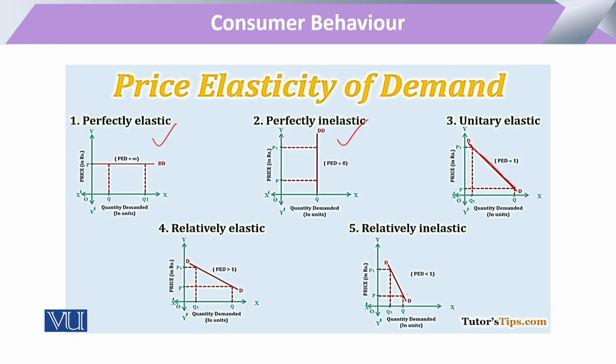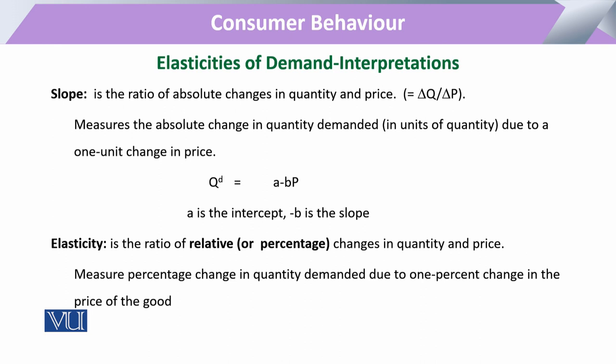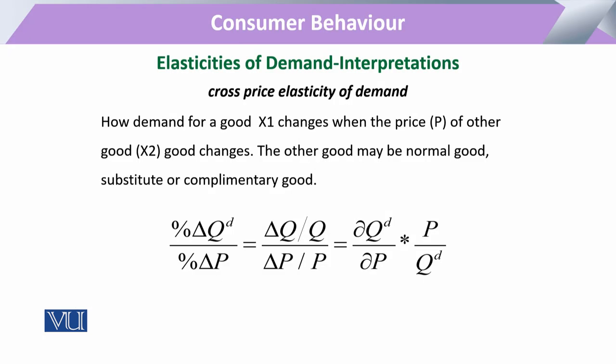When dealing with elasticity on a graph, we see the responsiveness of quantity with respect to price. There is an important difference between slope and elasticity: slope shows the ratio of absolute change in quantity to absolute change in price, whereas elasticity is not about absolute change — it is the ratio of relative changes in quantity and price.